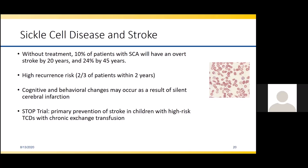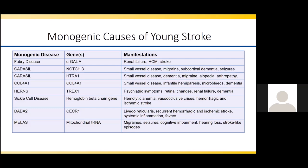There are many monogenic causes of young stroke that must be considered depending on the clinical scenario. The best guideline is that if there are syndromic symptoms or other organs involved, you should be thinking about genetic causes of stroke. If the stroke pattern is a small vessel pattern, you should also be thinking about monogenic or genetic causes, as small vessel disease is very uncommon in children and would suggest a genetic issue with the blood vessels.